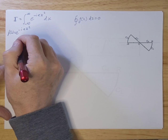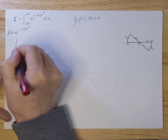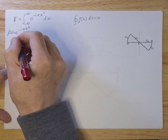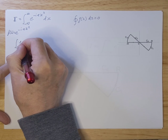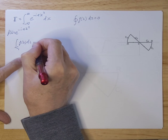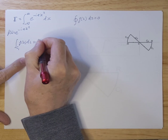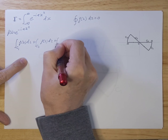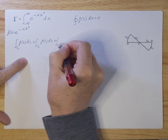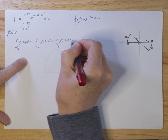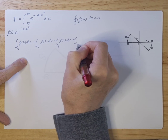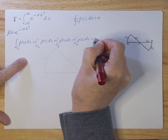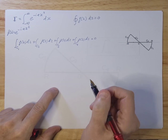We have essentially four different curves to calculate: there's a c1 curve of f(z) dz, there's a c2 curve, there's a c3 curve, and then there's c4. Those added up need to result in zero.